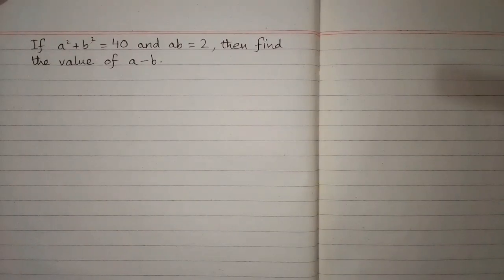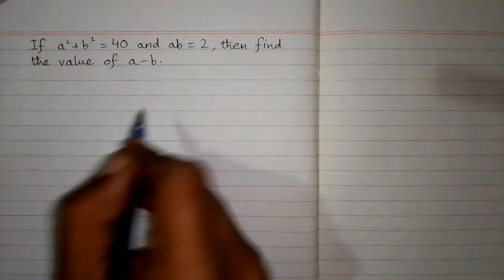If a squared plus b squared is equal to 40, and ab is equal to 2, find the value of a minus b.